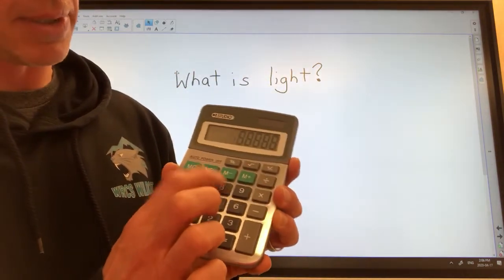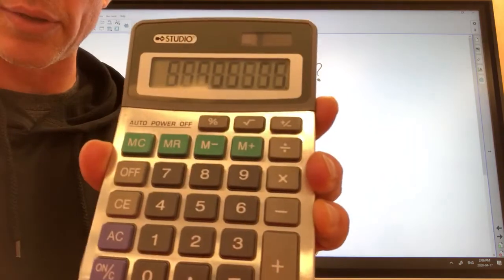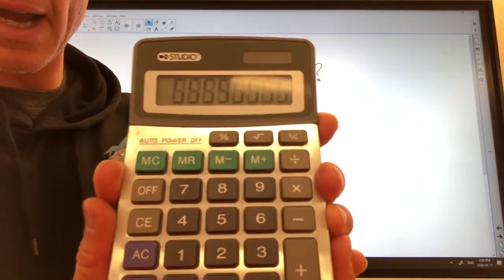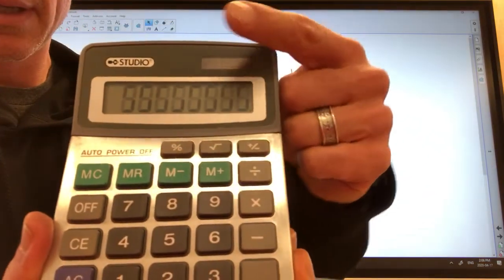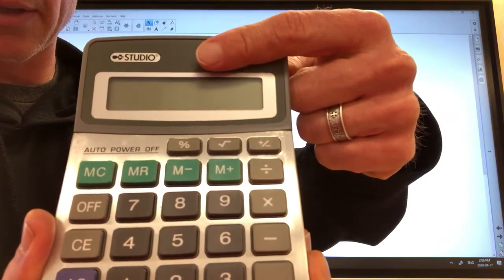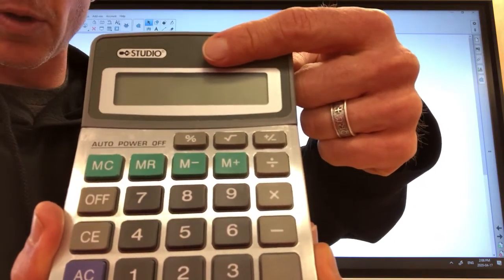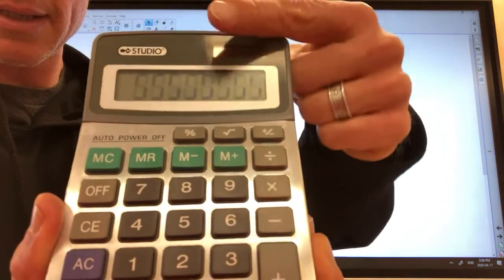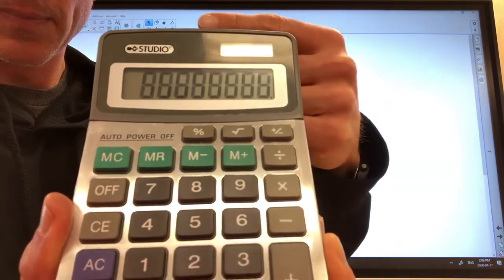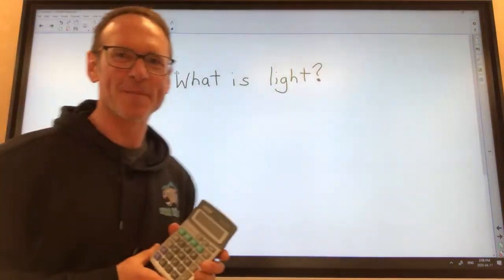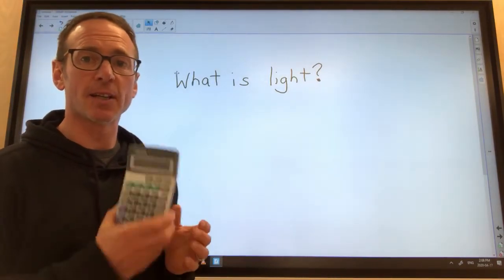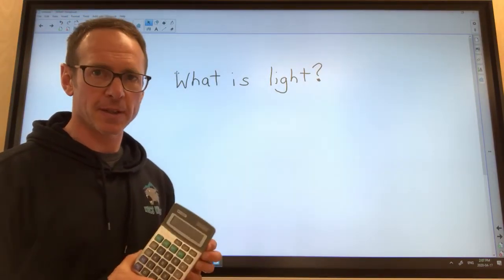If I cover up that rectangle in the corner, you'll see that the numbers go away. There it is again, and it goes away. One more time just for fun. It's because light can create electricity. The reason for this is that light is energy.